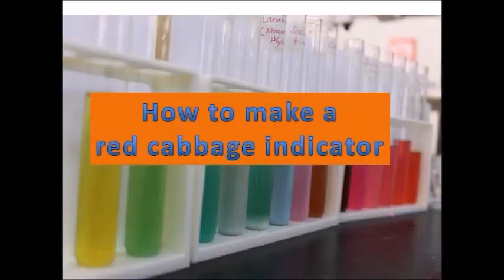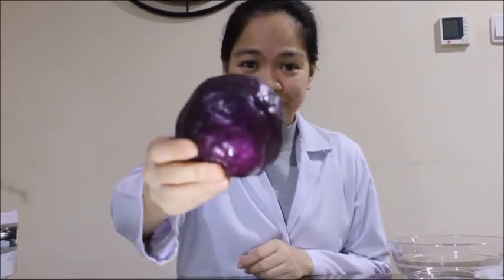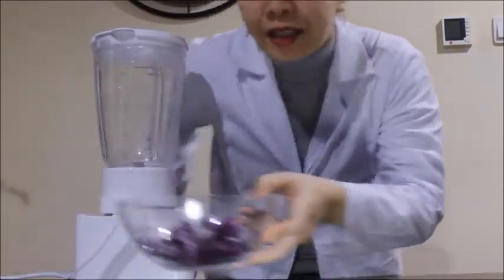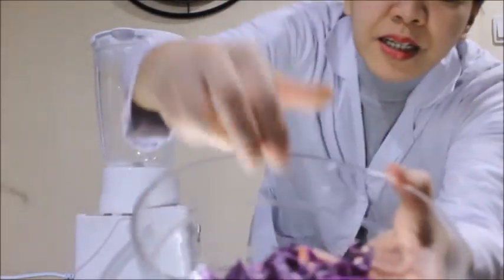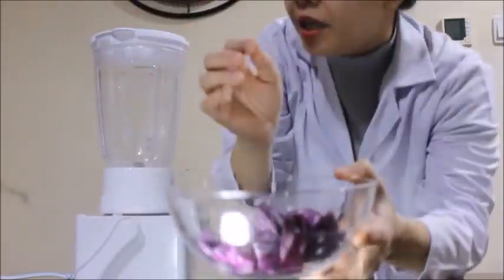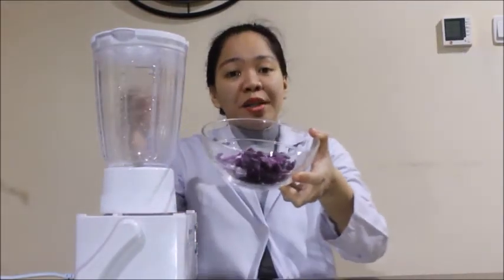I will now show you how to make a red cabbage indicator. To make our indicator, we will need a red cabbage. We will cut this into small pieces. After cutting, you can boil this and extract the juice. Or in this experiment, we will use a blender.